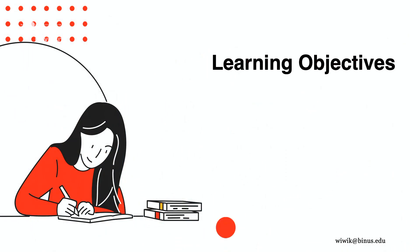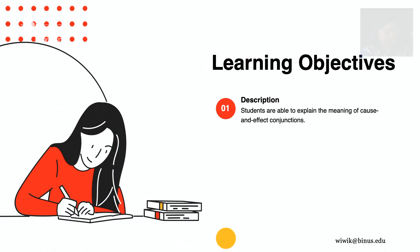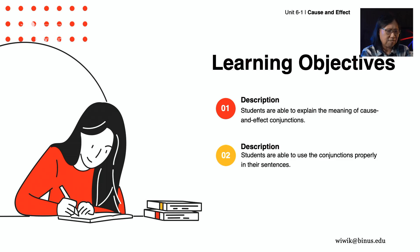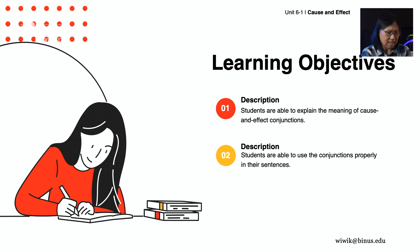So what do we have this time? Here are our learning objectives. At the end of this session, you are able to explain the meaning of cause and effect conjunctions, and you are able to use the conjunctions properly in your sentences.